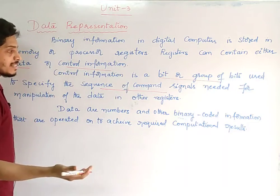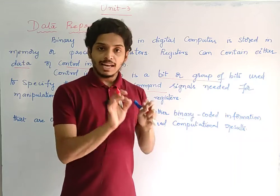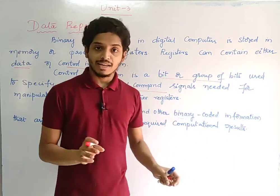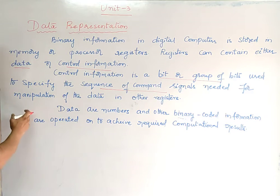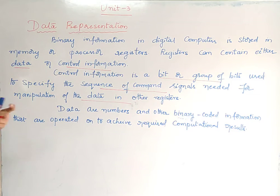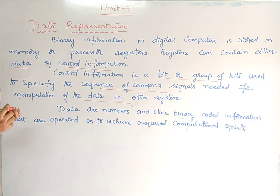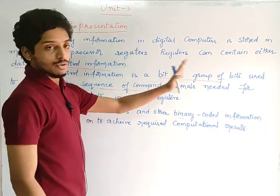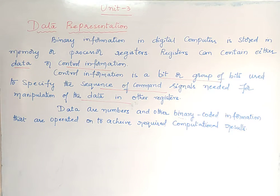Control information is a bit or group of bits used to specify the sequence of command signals needed for manipulation of the data in other registers. We need to manipulate data from various registers.